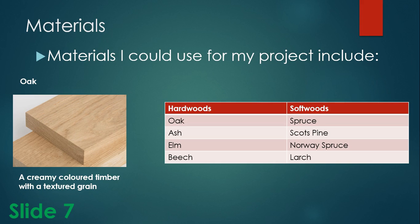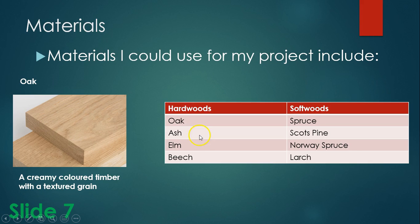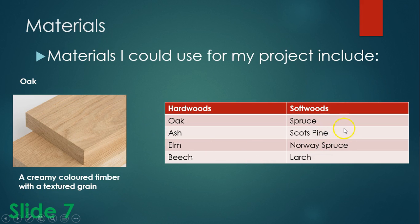Slide seven is the materials I've used. There are loads of materials you could use. I've done one example of oak — I have a heading, I have 'wood', and a little bit of text about it. I want you to put in maybe four or five different types of woods. There are examples there: oak, ash, elm, beech, spruce, Scots pine, Norway spruce, and larch.